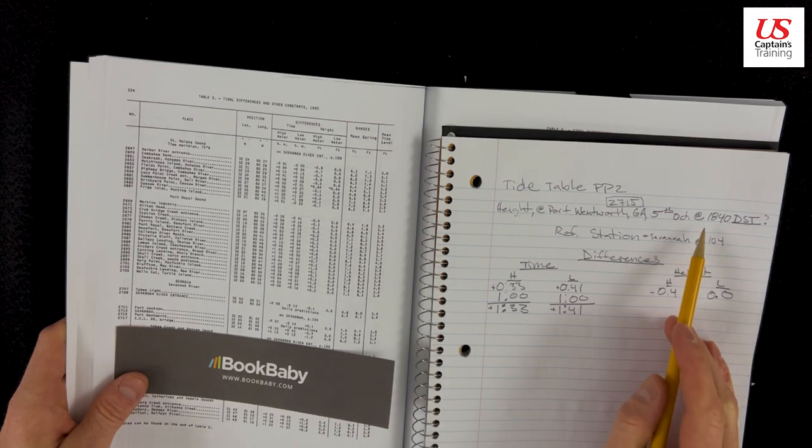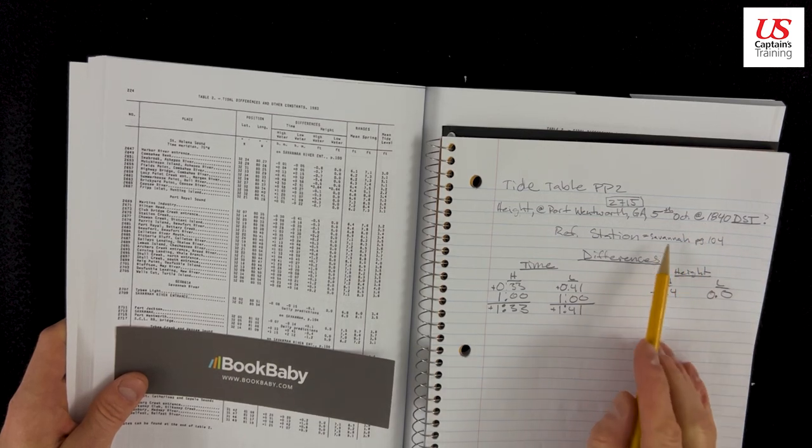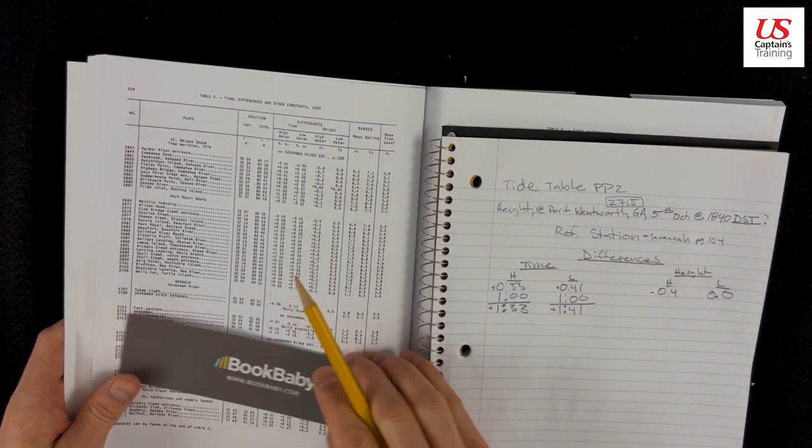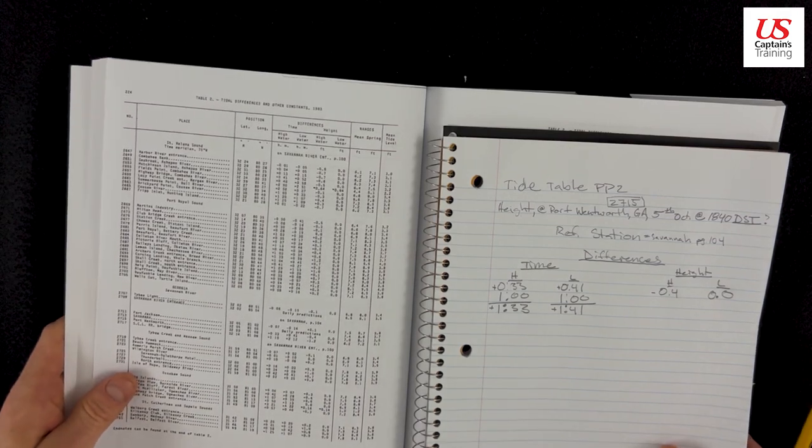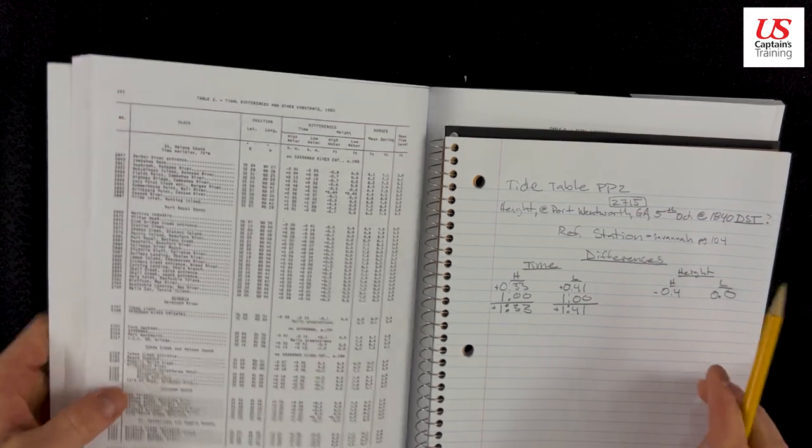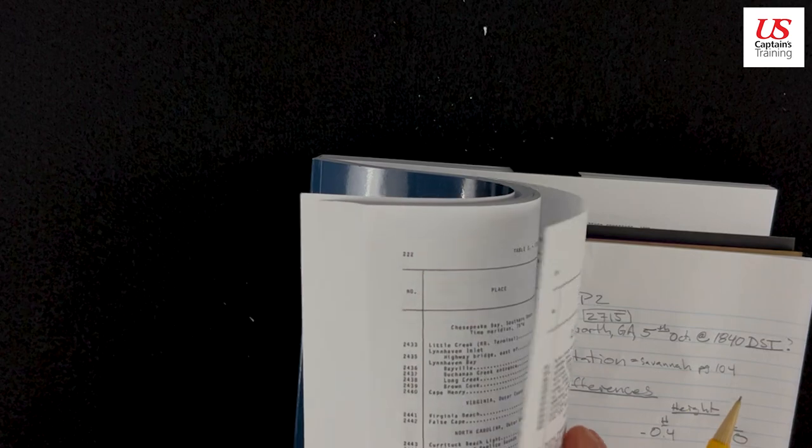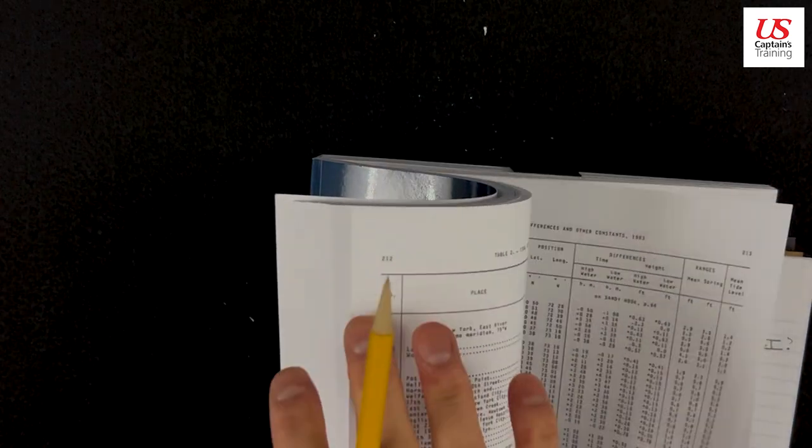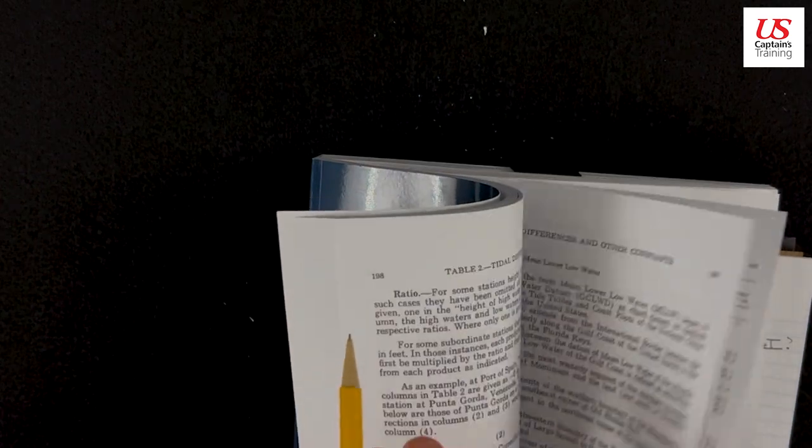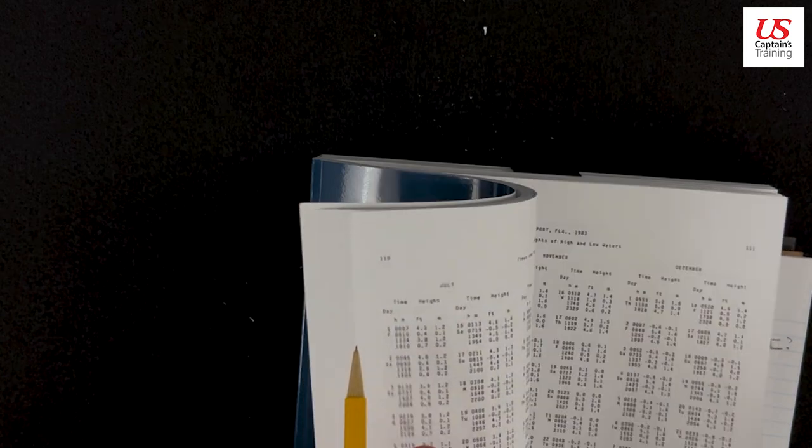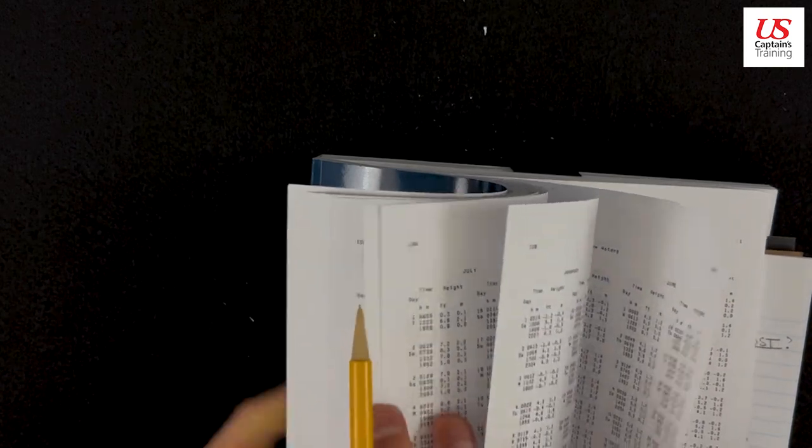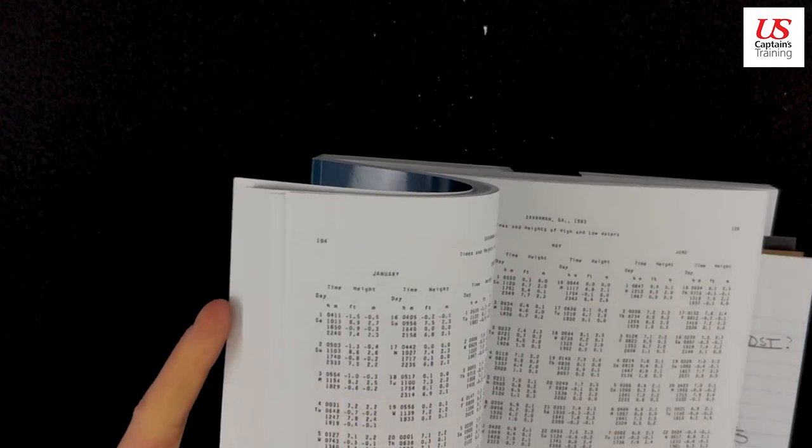A reference station. We're going to get the high and the low for the reference station of Savannah from Table 1. So page 104, and we're October 5th on page 104. So here's the page numbers.